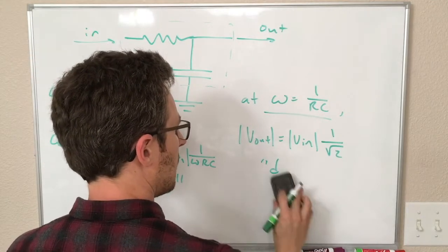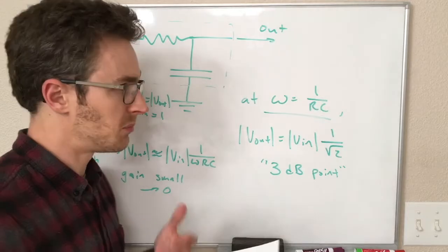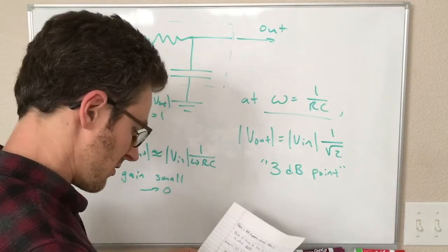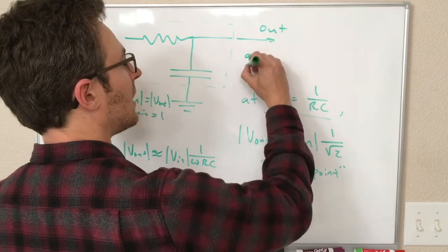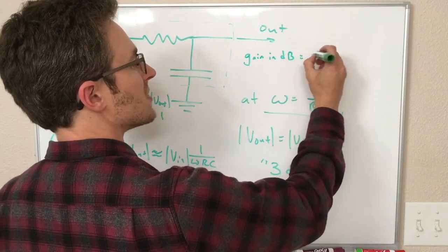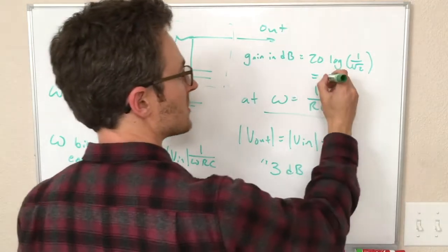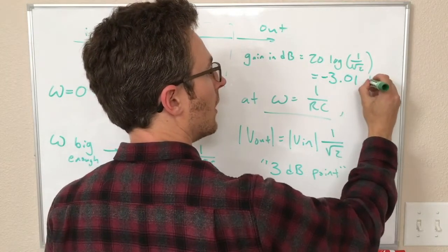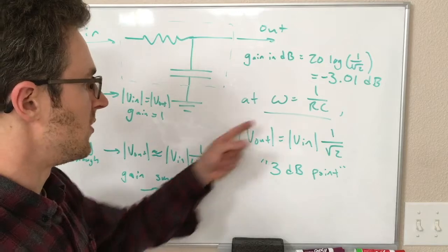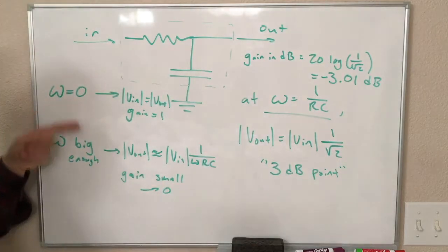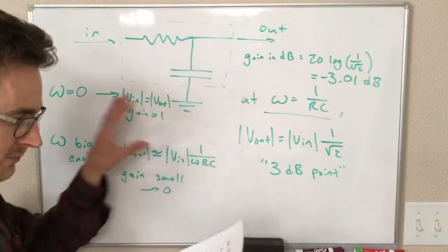This point, when omega equals 1 over RC, this is called the 3 dB point, the 3 dB point, for the following reason. This is basically a mathematical coincidence, if there is such a thing. When we have our output smaller by this fraction of 1 over root of 2, our gain in decibels is equal to 20 times the log of 1 over the square root of 2. If you plug this into a calculator, you will see this is equal to minus 3.01 decibels. A factor of the square root of 2 is very close to 3 decibels. This point where the behavior changes between these two behaviors, that's called the 3 dB point.